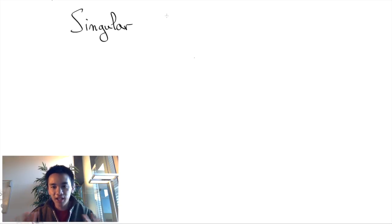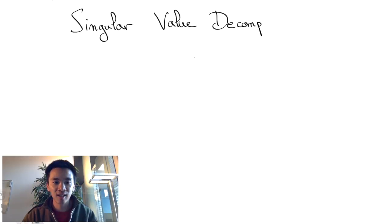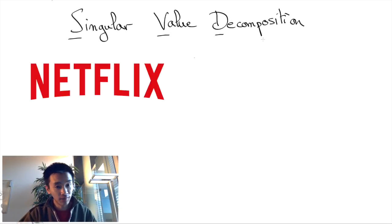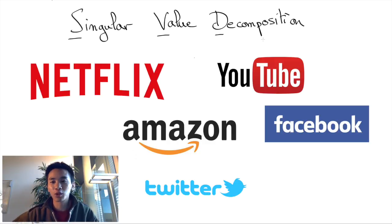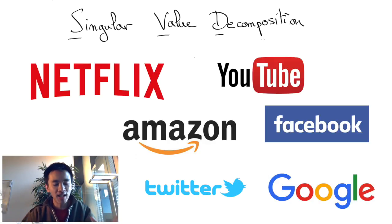More generally, SVD has great applications in recommending systems which are at the core of many businesses like Netflix, Amazon, YouTube, and even Facebook, Twitter, and Google. Big money is at stake here.